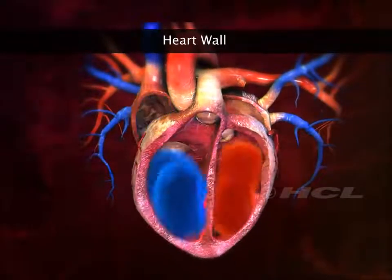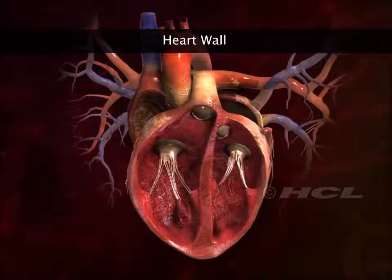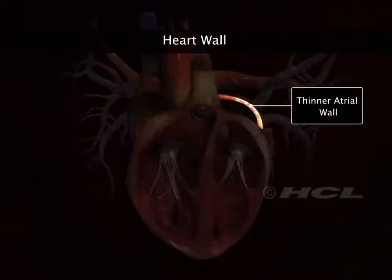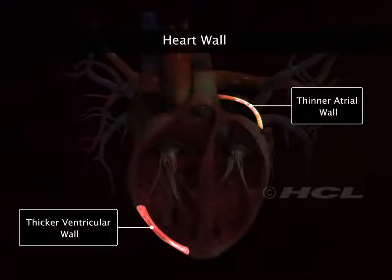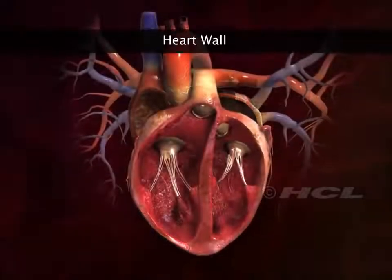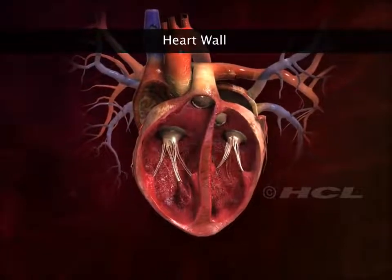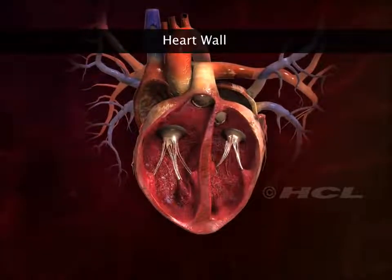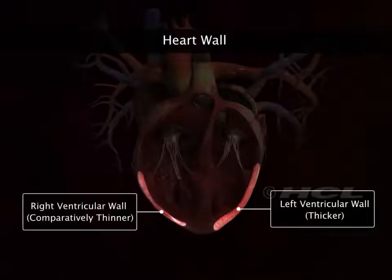The thickness of the walls of the four heart chambers varies with their functions. The walls of the atria are thinner than those of the ventricles, as the blood needs to be pumped into adjacent ventricles only. The left ventricle pumps blood a greater distance at higher pressure; therefore, the wall of the left ventricle is thicker than that of the right ventricle.